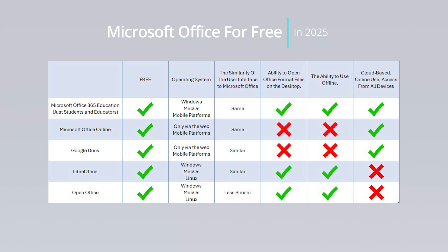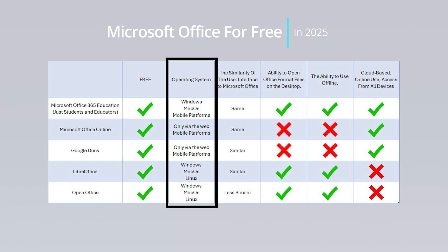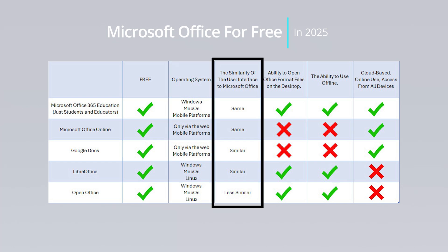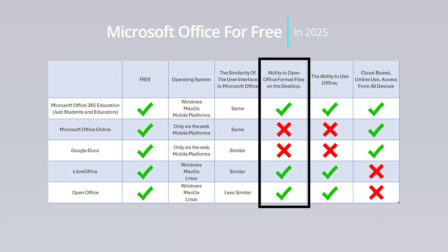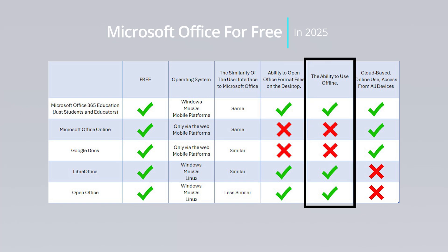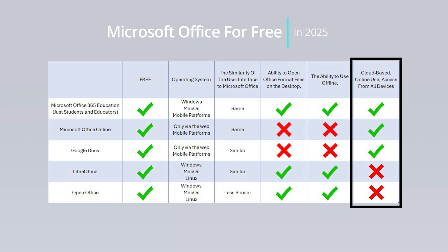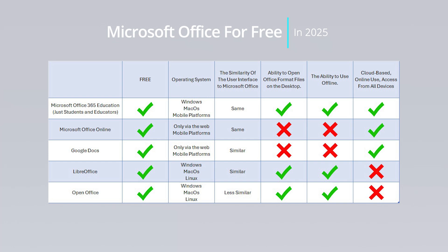In this video, I have categorized the methods for using Microsoft Office software for free based on different criteria. These criteria include the operating system you can use, the similarity to the Microsoft Office interface, the ability to work in a desktop environment and open files, offline availability, and cloud-based options for access from different platforms. By doing this, I aim to help you easily choose the free alternatives that best suit your needs.